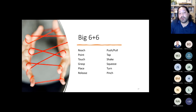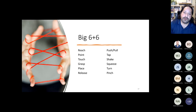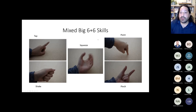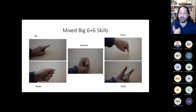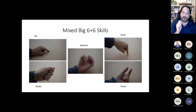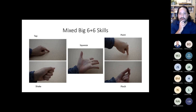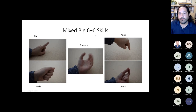The Big Six Plus Six, mentioned in the article, were originally identified by Eric Haughton and Annie Desjardins. They looked at reach, point, touch, grasp and place, release, push, pull, tap, shake, squeeze, turn, and pinch. These are comprised of the other skills we just talked about — for example, the shake is really just radial and ulnar deviation. These are important fundamental movements, and here's how we combine them in something called reach-grasp-place-release.